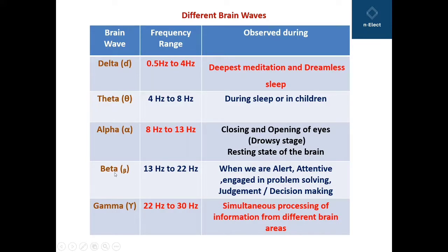The next are beta waves, having a frequency range of 13 Hz to 22 Hz, generally observed during alertness of the brain — that is, when we are alert, attentive, engaged in problem solving, or judgment and decision making. The last are gamma waves, occurring at higher frequencies between 22 Hz to 30 Hz, generally observed during multitasking processes of the brain, that is simultaneous processing of information from different brain areas.